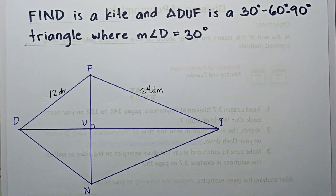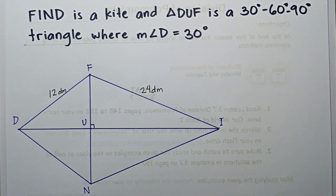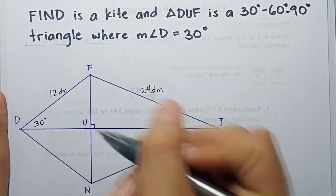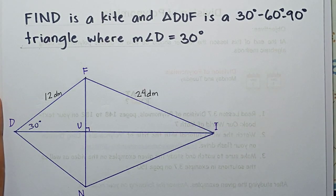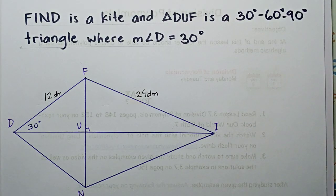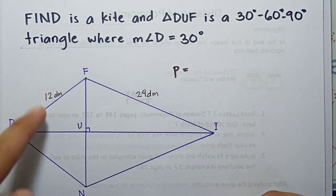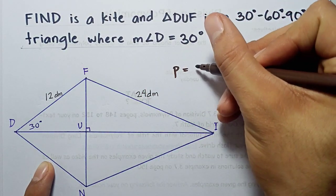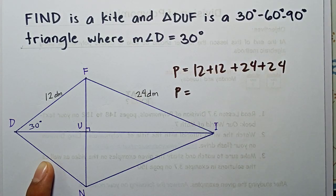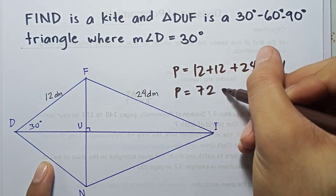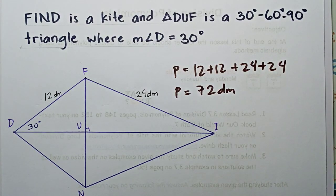FIND is a kite and triangle DUF is a 30-60-90 degree triangle where the measure of angle D is 30 degrees. First let's find the perimeter. We know the consecutive sides are congruent, so: P = 12 + 12 + 24 + 24 = 72 decimeters. Then to find the area, we don't have the measurement for the diagonals yet.